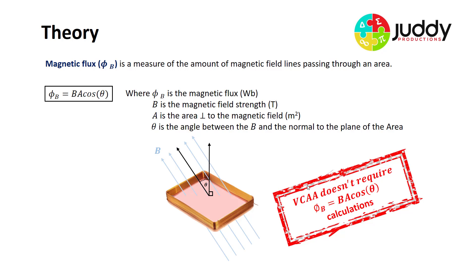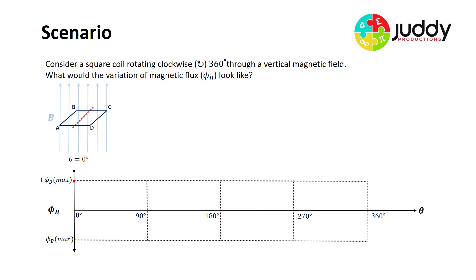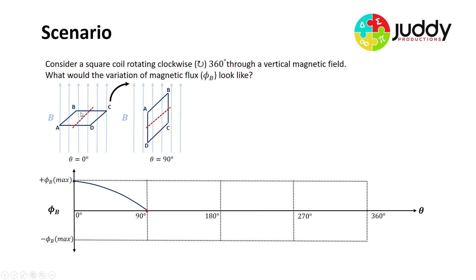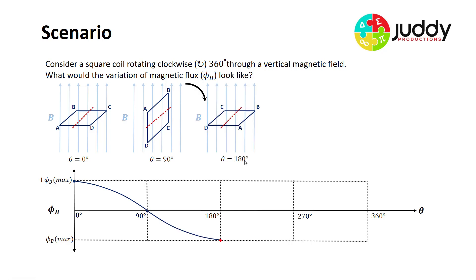Consider a square coil rotating clockwise 360 degrees through a vertical magnetic field. At zero degrees, the coil surface is perpendicular to the field, giving maximum flux. After 90 degrees of rotation, the coil is parallel to the field lines, so flux is zero. At 180 degrees, the field lines thread through again at maximum, but we call this a negative maximum because it's a different side of the coil being exposed.